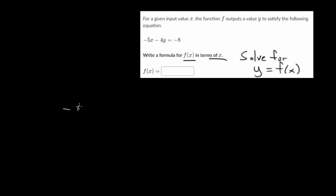We can rewrite this: -5x - 4y = -8. We're going to solve it for y. Let's move the x terms to the other side, essentially isolating this y term to get y equals something. We can add 5x on each side, and over here they cancel. We get -4y = 5x - 8.